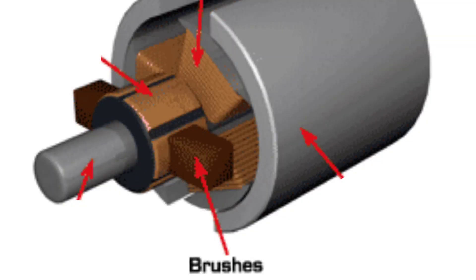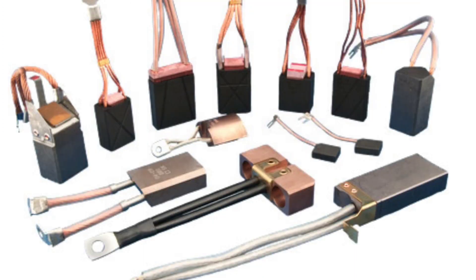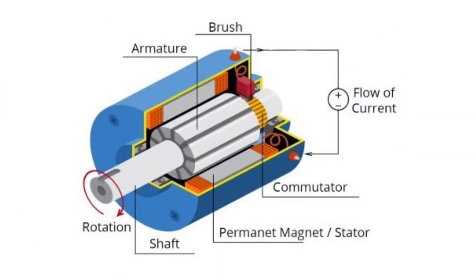The fourth main part is the brushes. The brushes of a DC motor are made with graphite and carbon structure. They conduct electric current from the external circuit to the rotating commutator. Together, the commutator and brush unit transmit power from the static electrical circuit to the mechanically rotating region — the rotor.